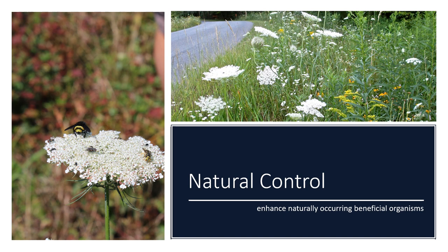Natural control is an attempt to enhance naturally occurring beneficial organisms. An example is encouraging certain flowering plants near borders which can provide pollen and refuge for predators and parasites of insect pests. Another example is to avoid spraying an insecticide for aphid control unless it is economically necessary and it is apparent that natural enemies will not control the aphids. By delaying insecticide applications until economically necessary, you give natural predators like the lady beetle a chance to control aphids.